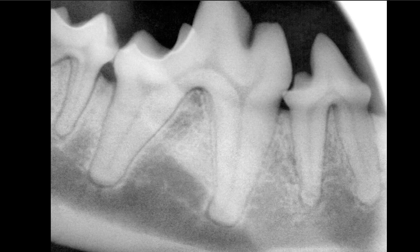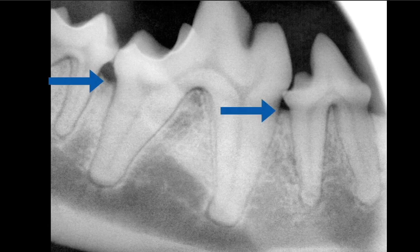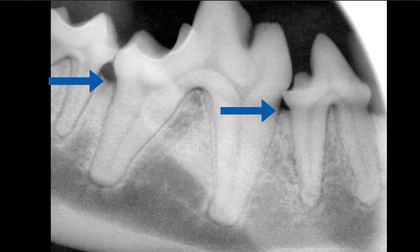Looking at a pretty normal radiograph of those three teeth and the bones surrounding them, the number one thing we're looking for is a change in where those arrows are pointing. That level of bone is called the marginal bone height, and if we get any decrease in that height adjacent to the tooth, where that bone starts to move down toward the apex, that's significant — that is an indication of periodontal disease.